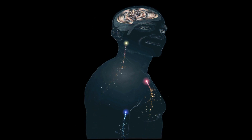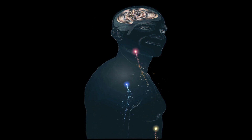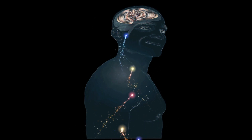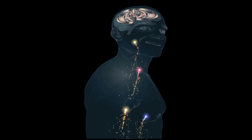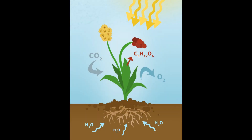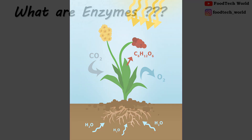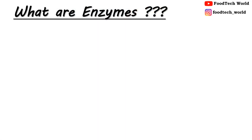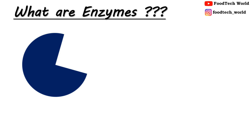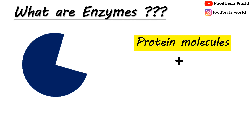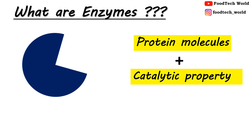The biological processes that occur within all living organisms are chemical reactions, and most of these chemical reactions are regulated by enzymes. Now what are enzymes? Enzymes are proteinaceous in nature — they are protein molecules that have catalytic property, meaning they act as a catalyst.